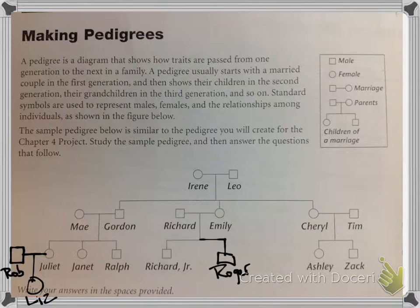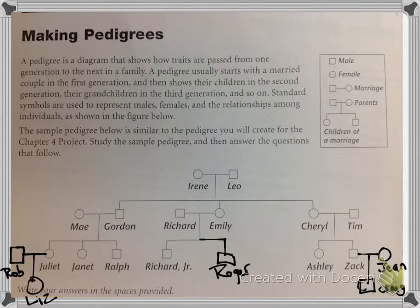And then finally, all the way on the right, Zach married a woman named Jean, and they had a son named Craig. So pedigrees are pretty simple in terms of reading. You're going to end up setting up some on your own. All you really have to remember is males have a square shape, females have a circle, if they're married you connect them, and then for offspring you draw a line from the middle of the two to include the offspring.